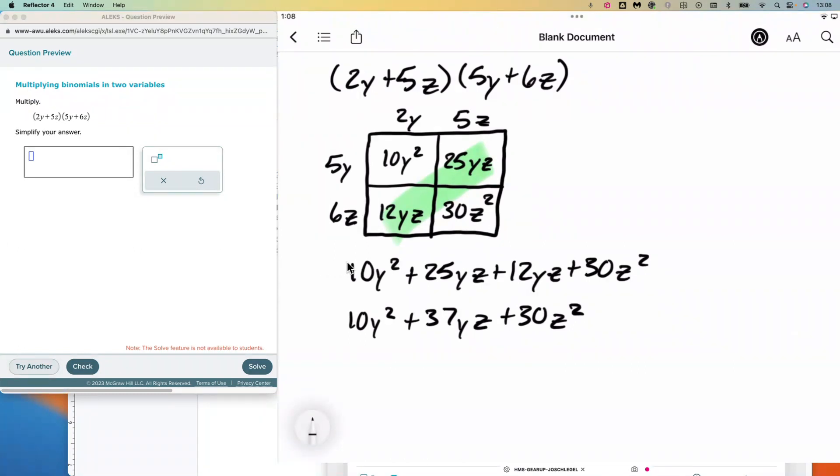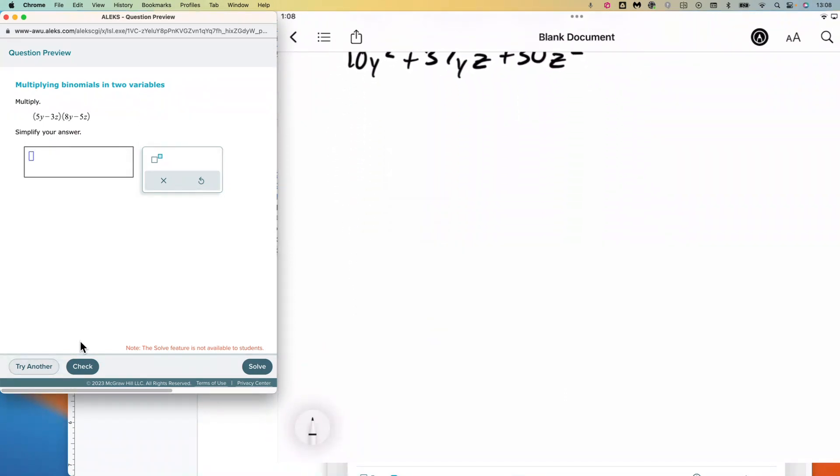I really like this area model for multiplying polynomials. I hope that it's something you find useful. It's the method I'm going to use as we continue through the next three problems together. So we're going to have 5y minus 3z.